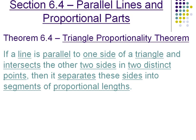Let's start with Theorem 6.4, the Triangle Proportionality Theorem. If a line is parallel to one side of a triangle and intersects the other two sides in two distinct points, then it separates these sides into segments of proportional lengths.